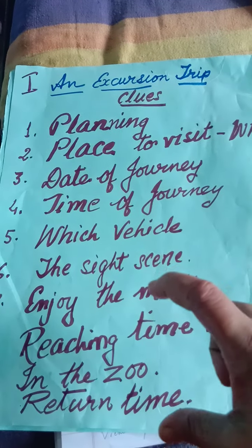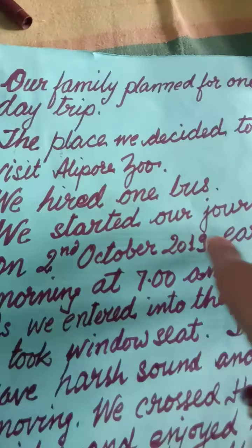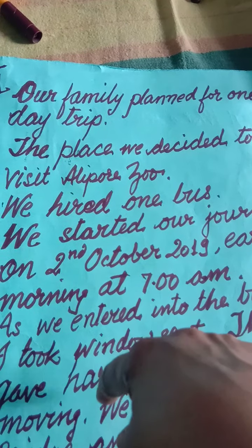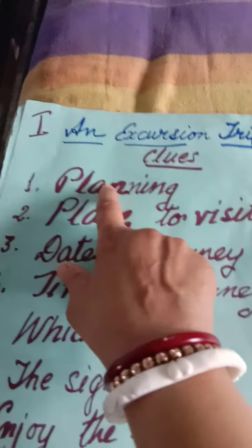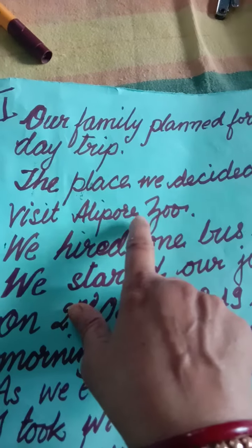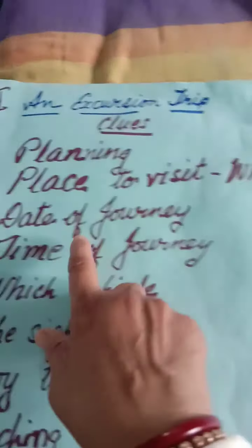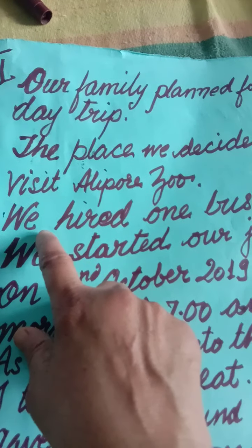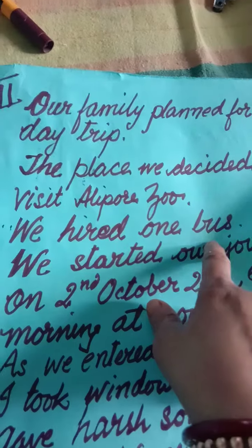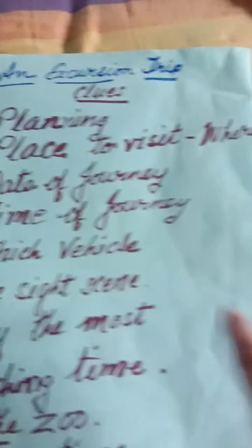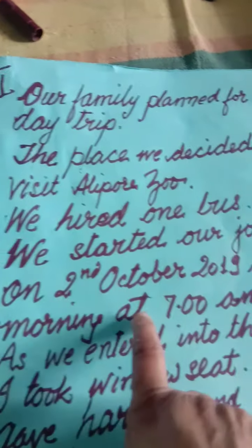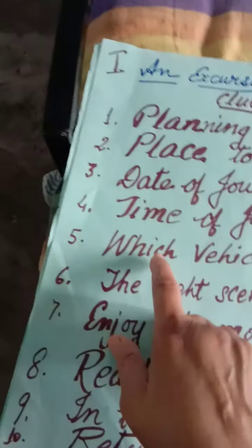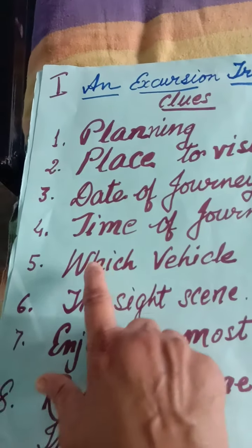So with the help of these clues we can create sentences, and I have used all the second form of verb. Our family planned for a one-day trip. The place we decided to visit was Alipur Zoo. We hired one bus. We started our journey on 2nd October 2019, early morning at 7 a.m. — so here comes date of journey, then time of journey.